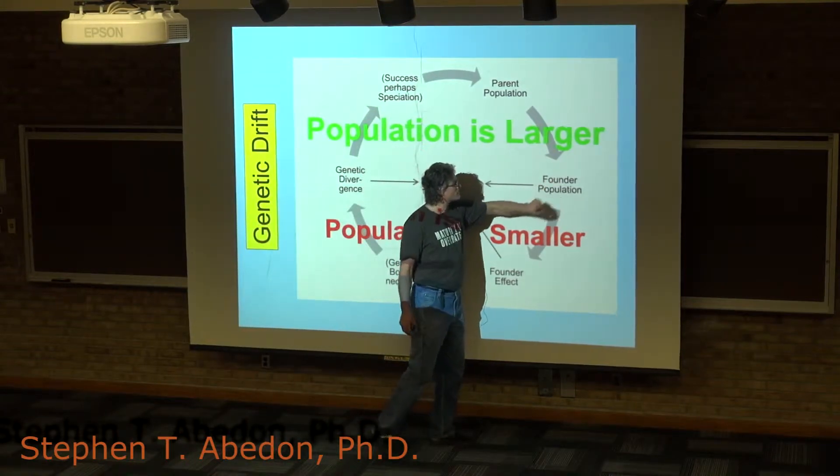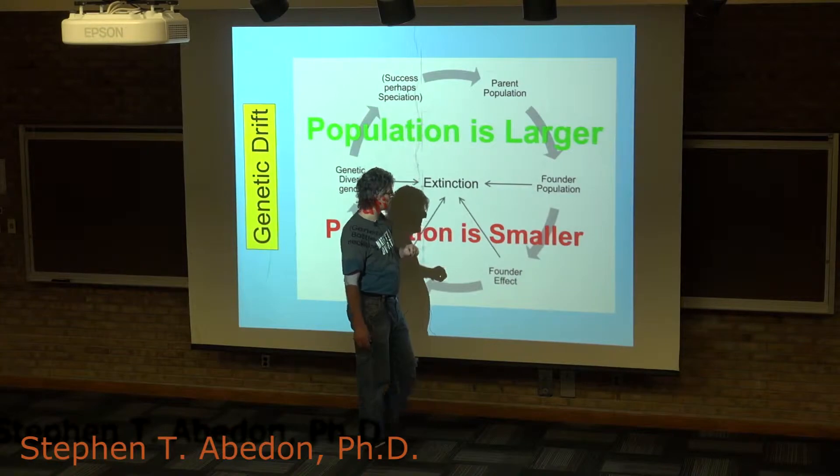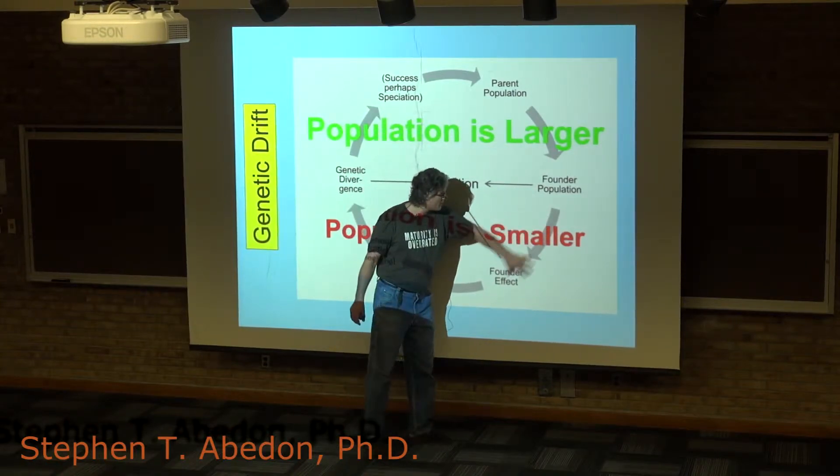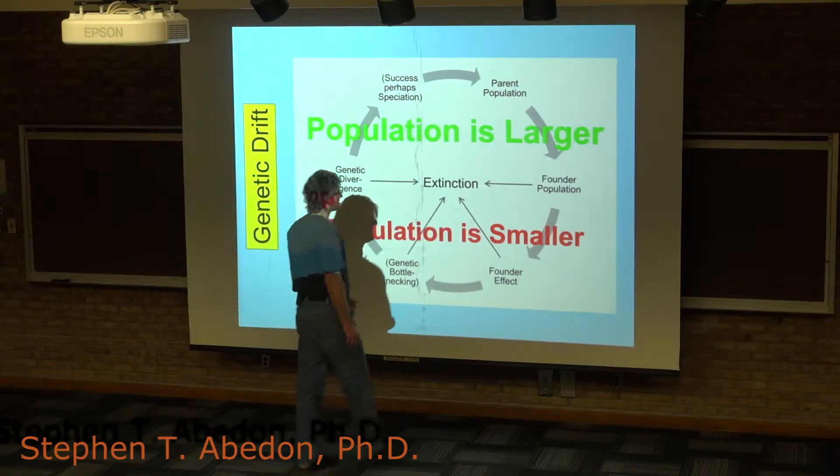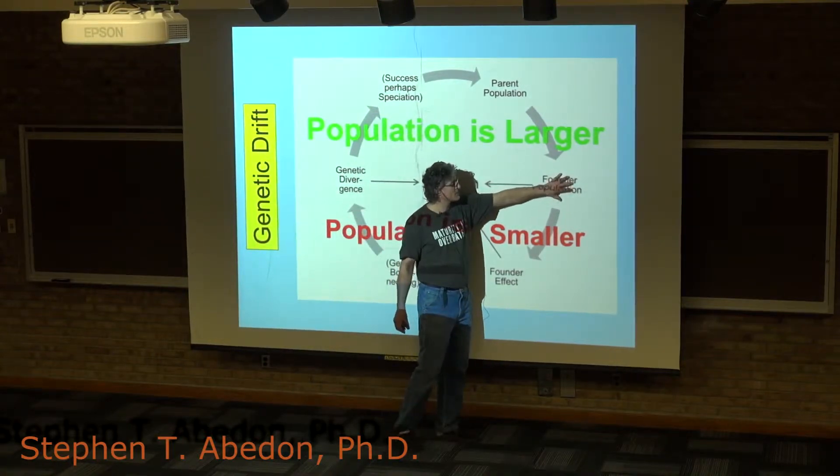That population is going to be smaller than the parental population. Immediately upon founding that population, there's going to be this founder effect because you have this sampling error where the allele frequency in the founder population may not be identical to that in the parental population.